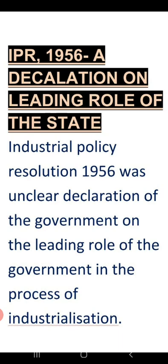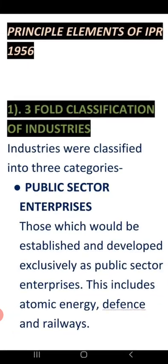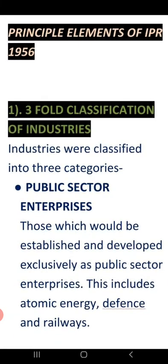Nothing could proceed without the permission of the government in the industrial process. Now, there are principal elements of IPR 1956. Number one: threefold classification of industries. Through IPR 1956, industries were divided into three parts.